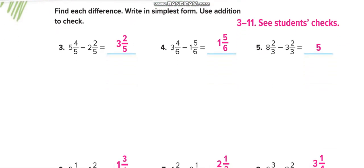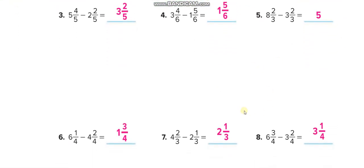In the independent practice, match your answers through the video. For example: 8 minus 3 equals 5, and 2 over 3 minus 2 over 3 equals zero, so we don't write zero — the answer is simply 5 whole with no fractions left.